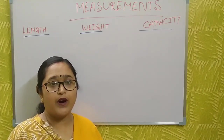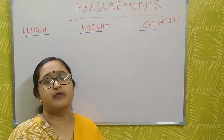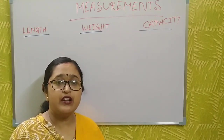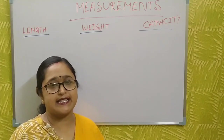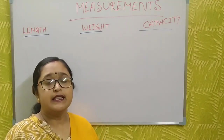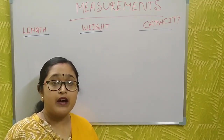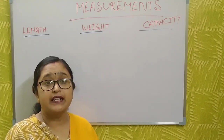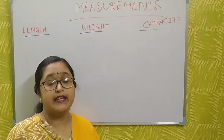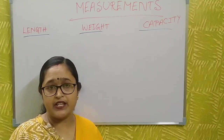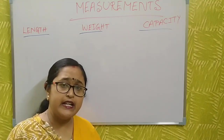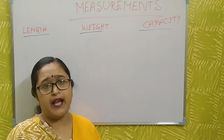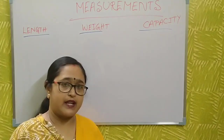And the capacity — what is capacity? Capacity is measured by liter, milliliter, and kiloliter. For example, milk is measured by liter. Any liquid item you can measure by liter or kiloliter, just like this.